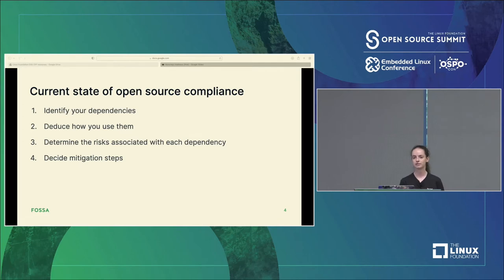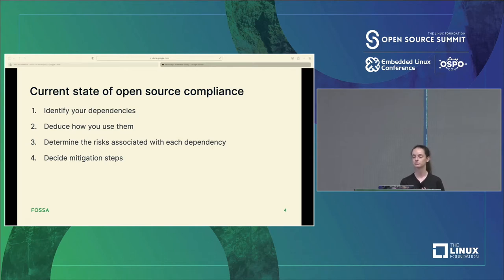Third, you need to take each dependency and look at the risks associated with it — is there a copyleft license that affects how you can distribute it, is there a security vulnerability or concern? And then fourth, once you have these pieces of information — you know what your dependencies are, you know how you use them, and you know the risks associated with each one — then you need to actually identify your mitigation steps. Maybe you need to stop using a dependency, or distribute your source code properly, or reference it on a distribution notice.